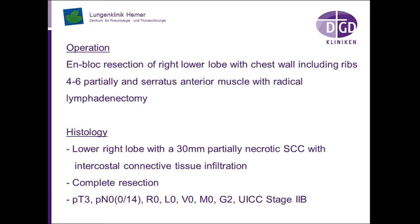Next we will show you a video describing the en bloc resection of the right lower lobe with local resection of the chest wall, including the fourth to sixth ribs, serratus anterior muscle, and radical lymphadenectomy. The histology of the resected lobe revealed a 30-millimeter, partially necrotic squamous cell carcinoma with intercostal connective tissue infiltration.